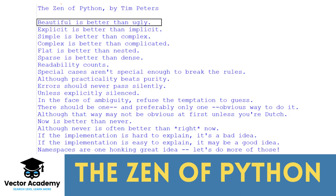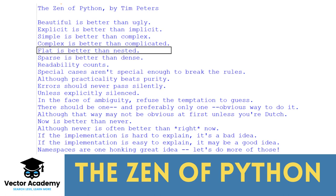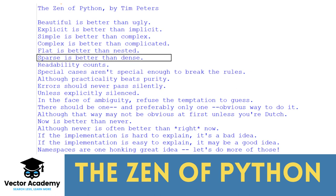Beautiful is better than ugly. Explicit is better than implicit. Simple is better than complex. Complex is better than complicated. Flat is better than nested. Sparse is better than dense. Readability counts.